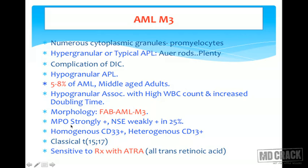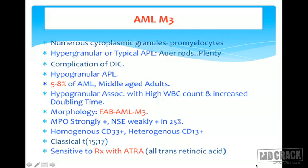Special immunochemistry stains for AML M3: myeloperoxidase is strongly positive; non-specific esterase is weakly positive in about 25% of cases; CD33 is positive (homogeneous and heterogeneous); CD13 is positive. Most importantly, translocation t(15;17) is present. From a clinical point of view, AML M3 is treatable with ATRA (all-trans retinoic acid), which is the drug of choice and is said to be curative in most cases.